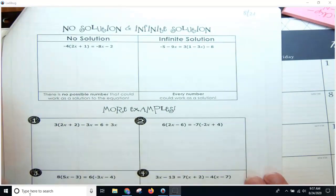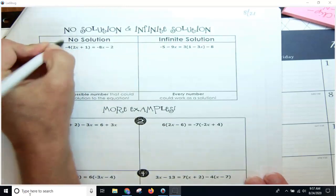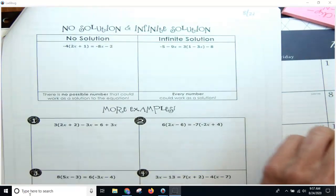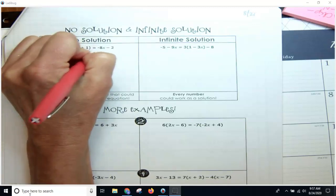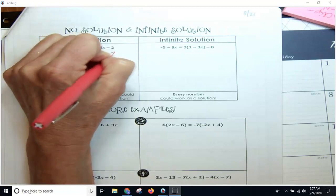So if I were to work this problem out, I would first distribute—that's my first step. So I would get negative 8x minus 4 equals negative 8x minus 2.